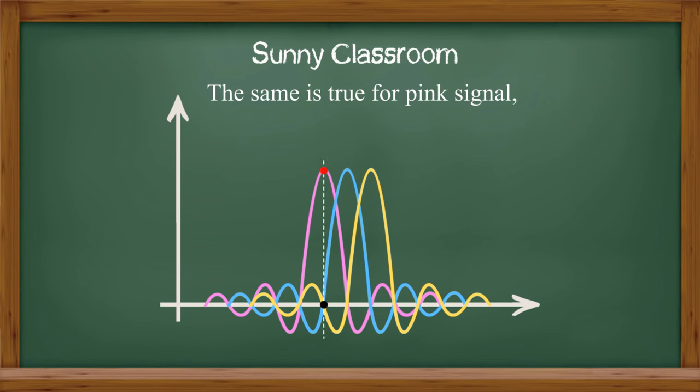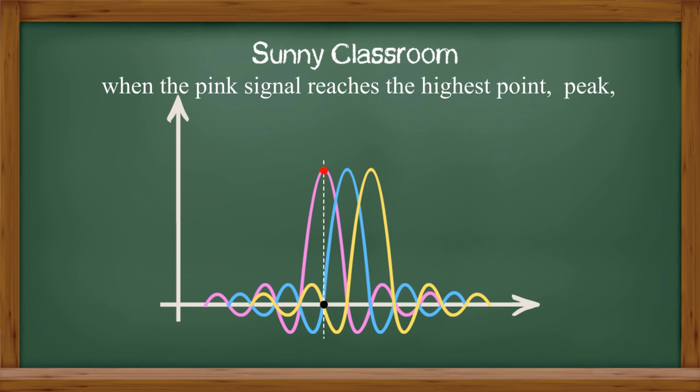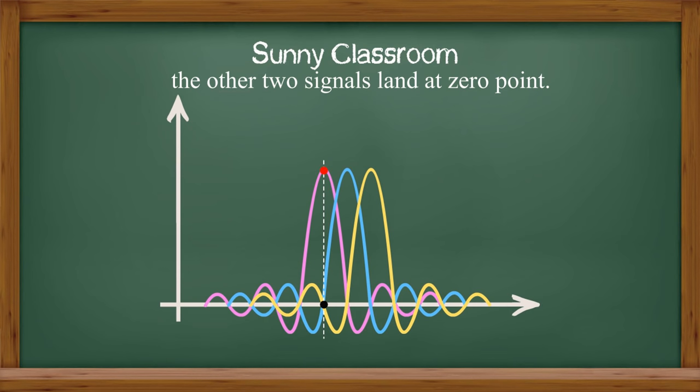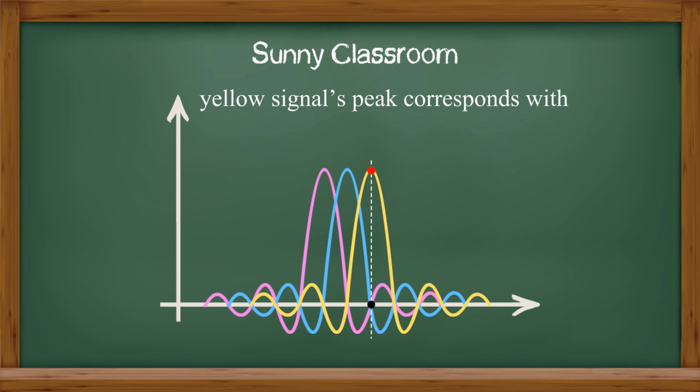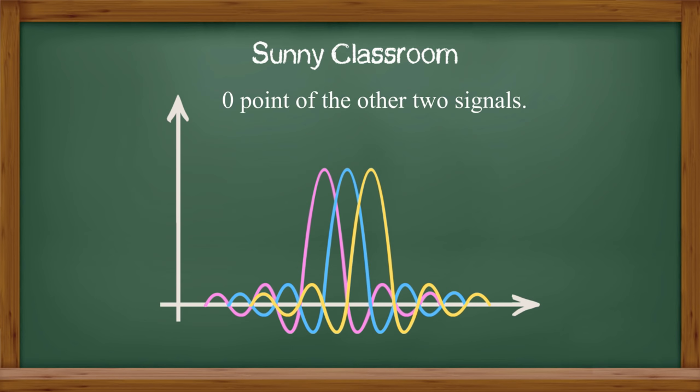The same is true for pink signal. When pink signal reaches the highest point, peak, the other two signals land at zero point. With the same pattern, yellow signal's peak corresponds with zero point of other two signals.